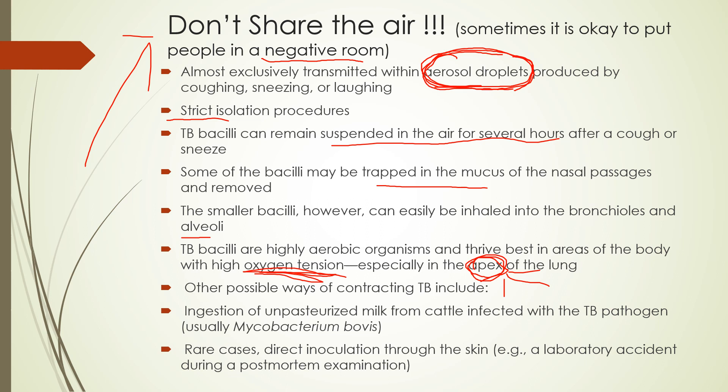Other less common ways to get TB: drinking unpasteurized milk from cattle with TB — this is called Mycobacterium bovis (bovis like bovine, from the cow). It can also be transmitted through the skin, though rarely, such as in laboratory accidents. However, most of the time you'll get it from respiratory exposure.